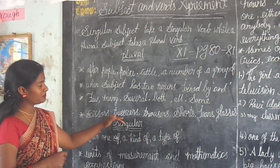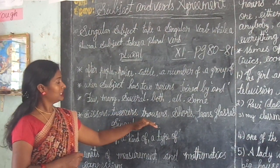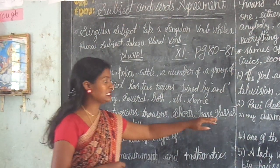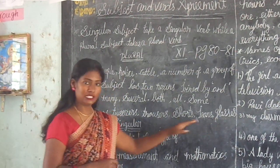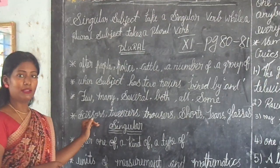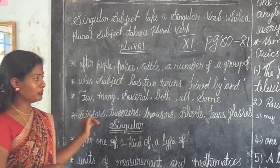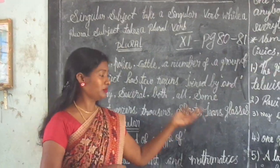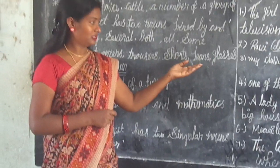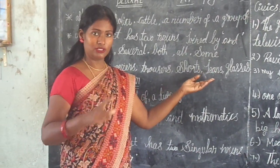Words that are always plural include: scissors, tweezers, trousers, shorts, jeans, and glasses. In general, these all require a plural verb.